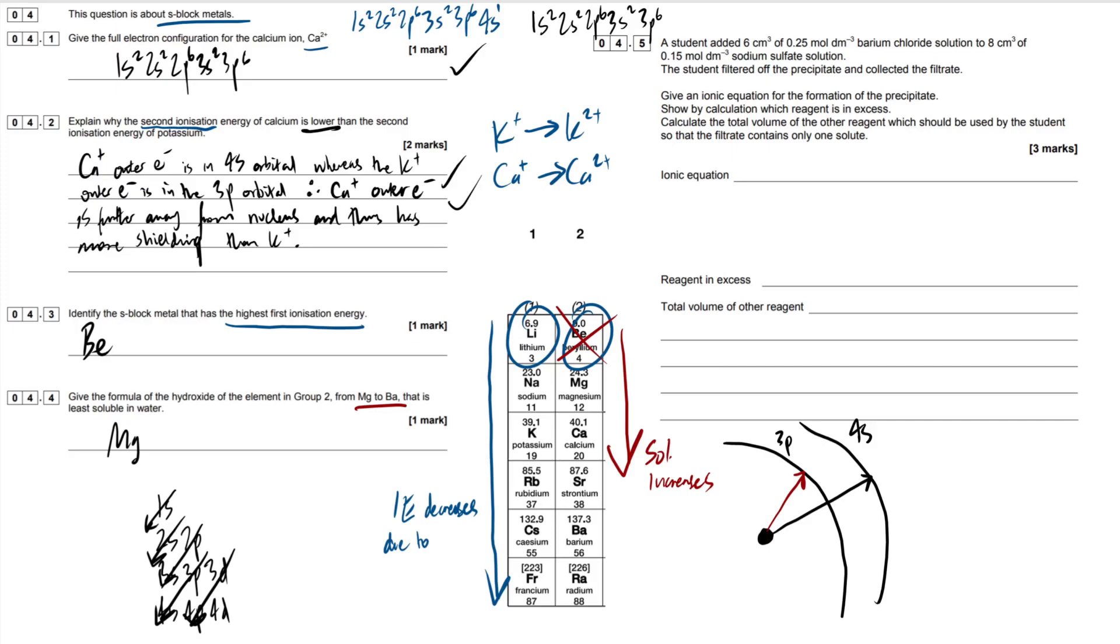4.5 then. Got a nice calculation going on. So a student added six centimeters cubed of 0.25 mole per decimeter cubed barium chloride to eight centimeters cubed of 0.15 mole per decimeter cubed sodium sulfate solution. The student filtered off the precipitate and collected the filtrate. Give an ionic equation for the formation of the precipitate. Show by calculation which reagent is in excess. Calculate the total volume of the other reagent which should be used by the student so that the filtrate contains only one solute.